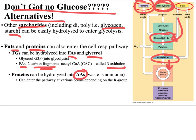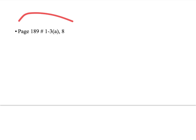Proteins can also enter cellular respiration. They're hydrolyzed into their component amino acids, producing ammonia as a waste product. Depending on the R group, amino acids can enter as pyruvate, as acetyl-CoA, or directly into the citric acid cycle. There's variability because of the variability of R groups, but other macromolecules beyond glucose can definitely enter the cellular respiration pathway.